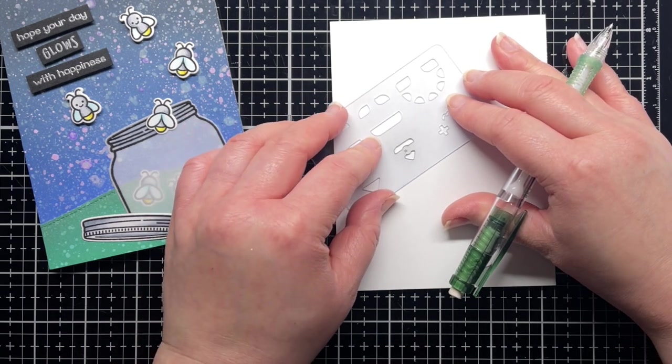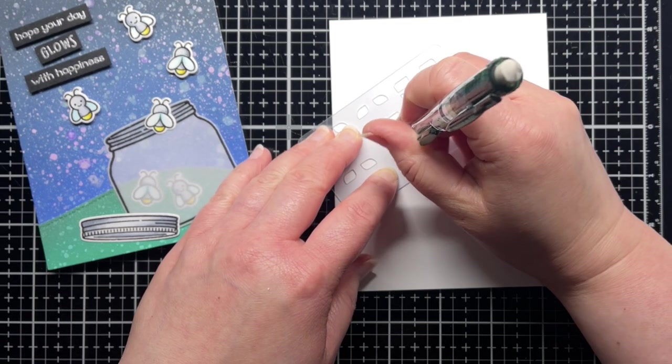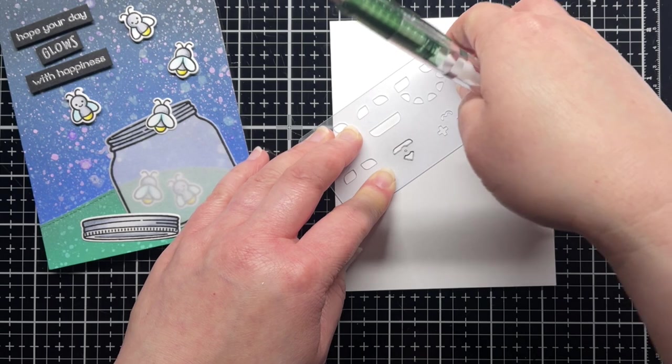Again, I start with my template with the traced holes. I trace the outline of my three circuit stickers in the same orientation as the last panel.